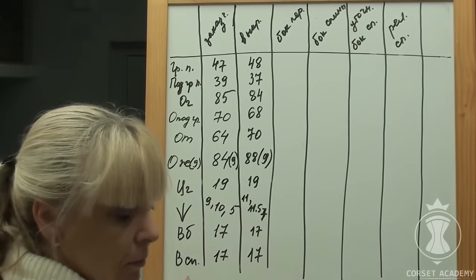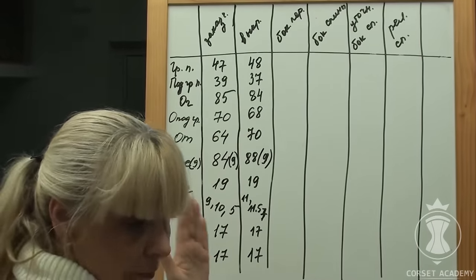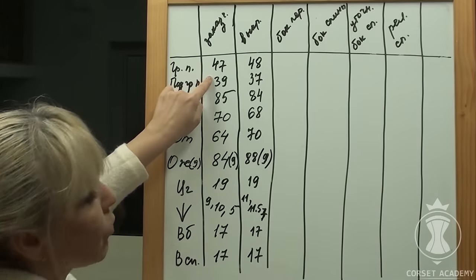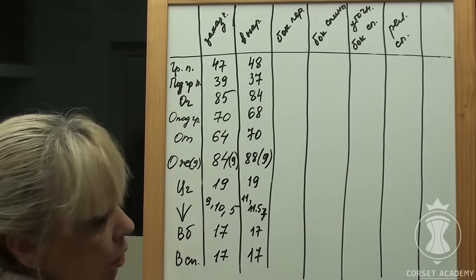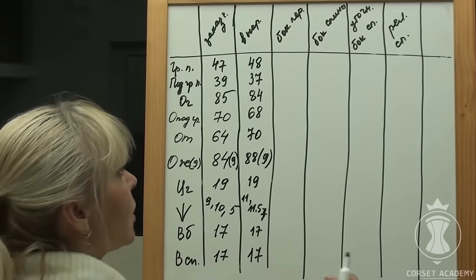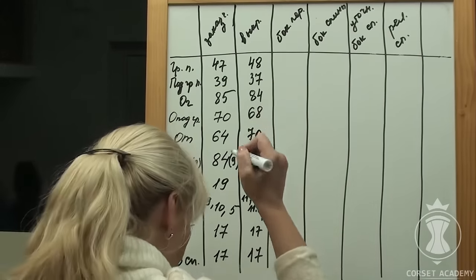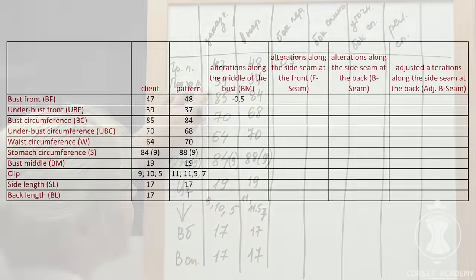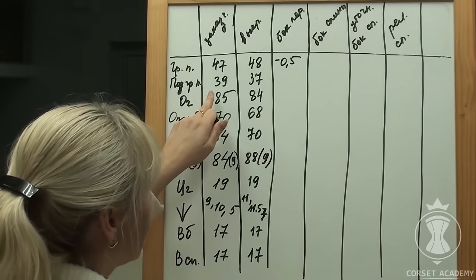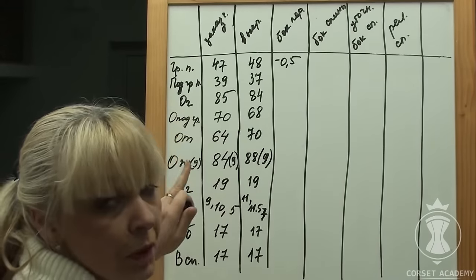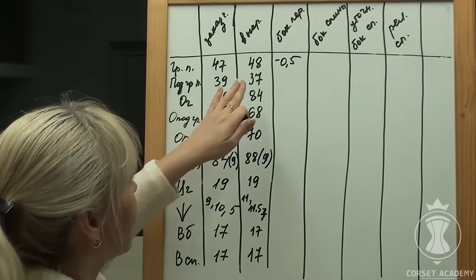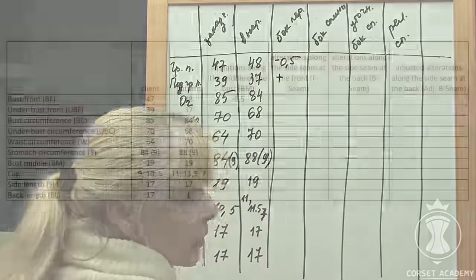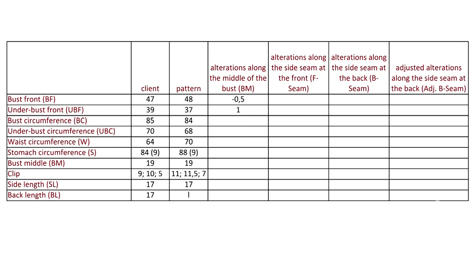Now let's see what happens with the location of the side seam. Bust front measurement: my client's measurement is 47 cm, but we have 48 on the pattern. Therefore, we need to narrow the pattern by 0.5 cm to get the right size. Underbust measurement: it's all the other way around. The client's 39 cm correspond to 37 cm on the pattern, so we need to expand the pattern by 1 cm.